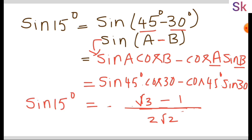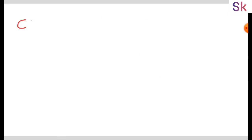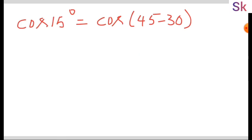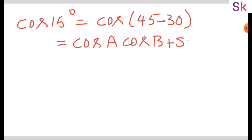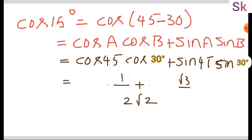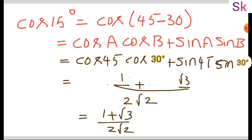So sin 15 degrees equals (√3 minus 1) over 2√2. Similarly, using this complementary angle formula we can find the cos 15 value also. So cos 15 equals (1 plus √3) over 2√2.